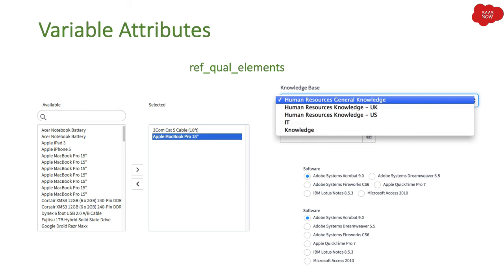The last attribute is ref_qual_elements. This is applicable for lookup multiple choice, lookup select box, and list collector. It is where you put the list of fields to be sent back to the server to get an updated reference. I haven't really used this particular attribute in practice, because the other attributes we talked about earlier are what you will use most when creating different kinds of Service Catalog items and variables. Thanks for watching my video, have a great day.